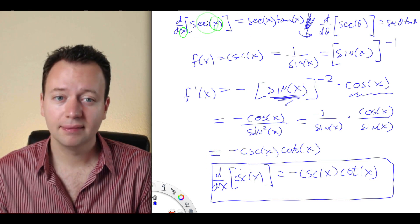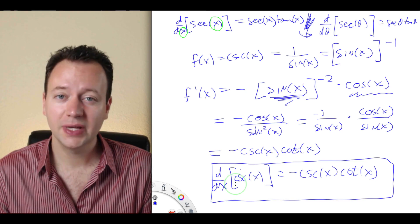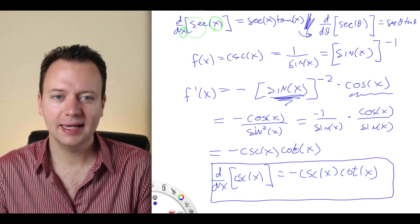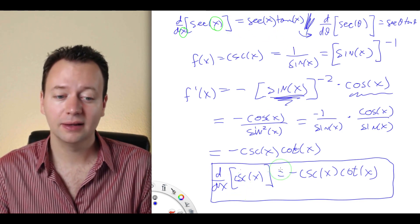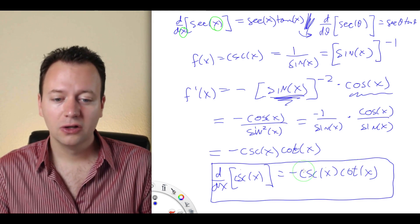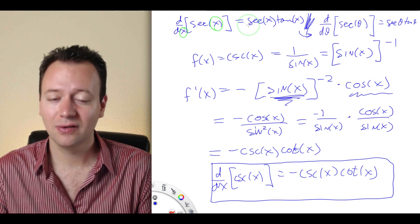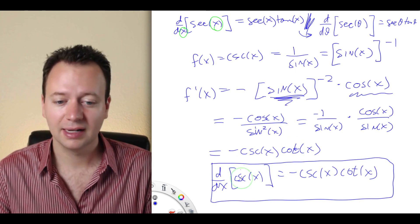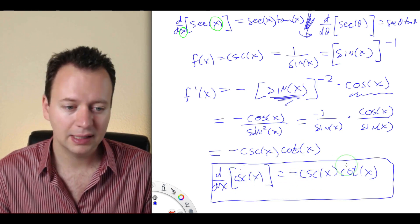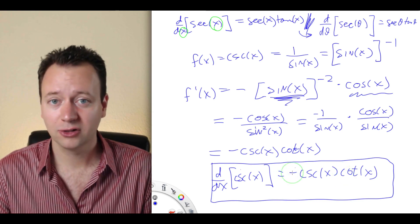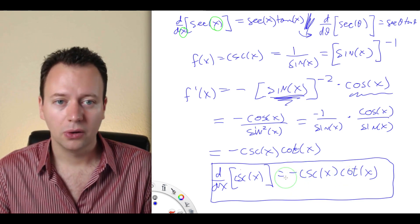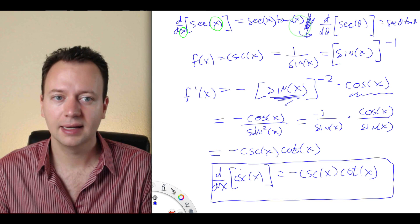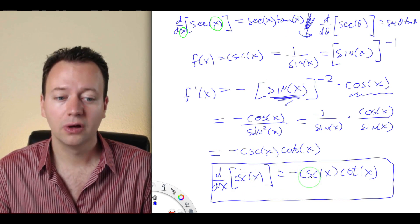Comparing the two results: the derivative of secant x equals secant x tangent x, and the derivative of cosecant x equals negative cosecant x cotangent x. Notice the pattern: secant goes to secant·tan, while cosecant goes to negative cosecant·cotangent. For cosecant, it's the same formula but with an extra 'co' in front of each function — cosecant instead of secant, cotangent instead of tangent — plus an extra minus sign. They're very similar and easy to remember together.